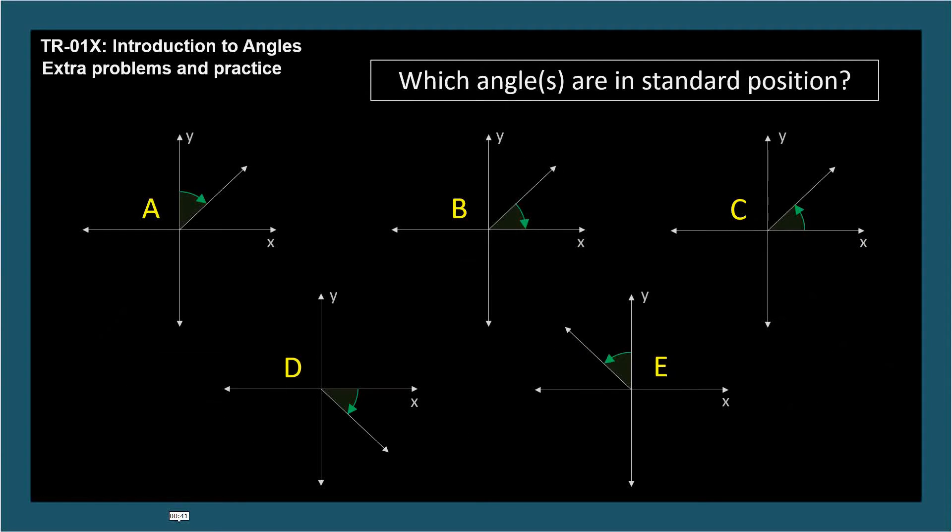Which of these angles are in standard position? Standard position means the initial side is along the positive x-axis and the vertex is at the origin. So angles C and D are in standard position. C is a positive angle and D is negative.